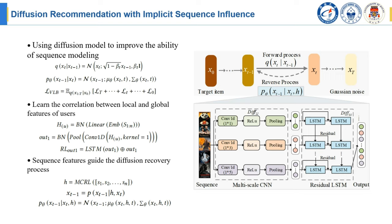Finally, under the influence of sequence features, the feature H is used as the restoration condition for the diffusion model to guide the reverse process.